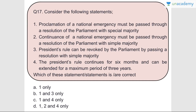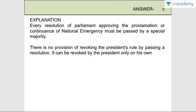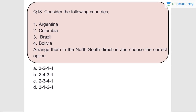Question number seventeen: Consider the following statements. Statement one - proclamation of a national emergency must be passed through a resolution of Parliament with special majority - correct. Statement two - continuance of a national emergency must be passed through a resolution with simple majority - wrong, it also requires special majority. Statement three - President's Rule can be revoked by Parliament by passing a resolution of simple majority - wrong. Statement four - President's Rule continues for six months and can be extended for a maximum period of three years - correct. Answer is C, one and four. The President's Rule can be revoked by the President only on his own.